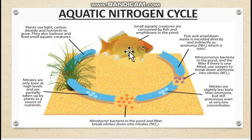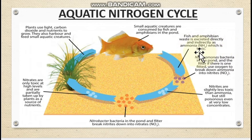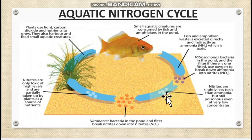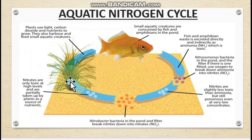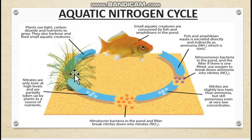In the aquatic nitrogen cycle, small aquatic creatures are consumed by fish and amphibians in a pond. Fish and amphibian waste is excreted directly and indirectly as ammonia, which is toxic. Nitrosomonas bacteria convert ammonia into nitrites, which are less toxic but still poisonous. Nitrobacter bacteria then convert those nitrites into nitrates, which are very low in toxicity and are absorbed by green plants as a nutrient source. Plants utilize carbon dioxide and light energy from the sun to convert those nitrates into proteins, which are then consumed by animals.